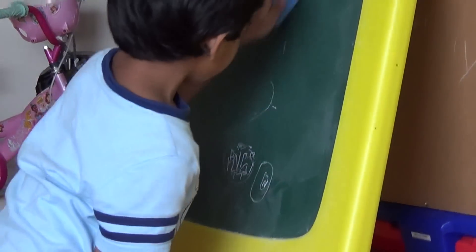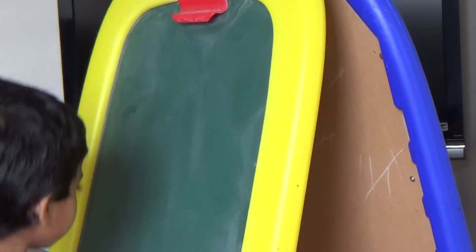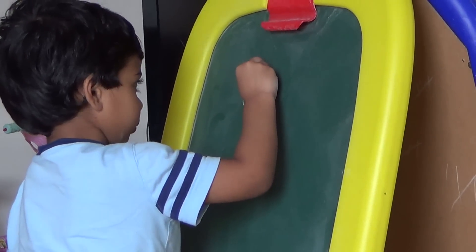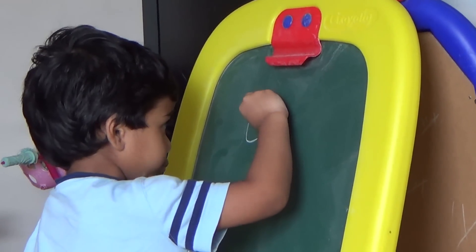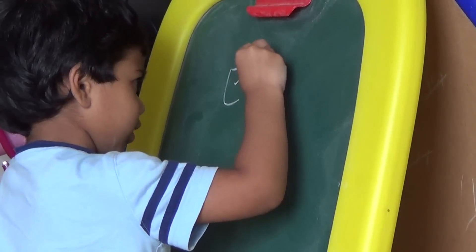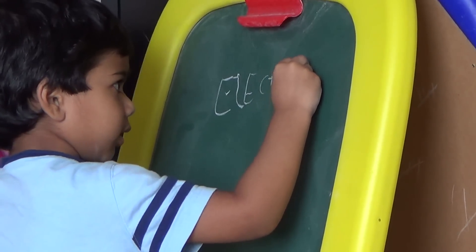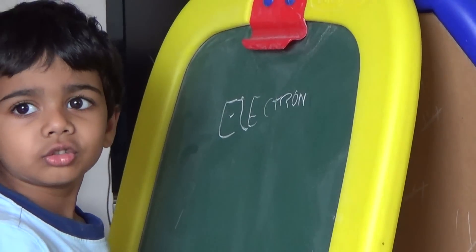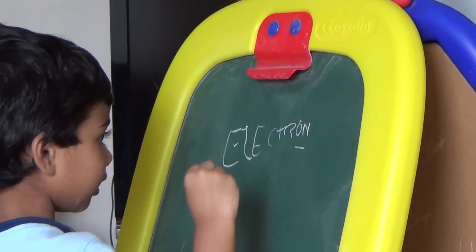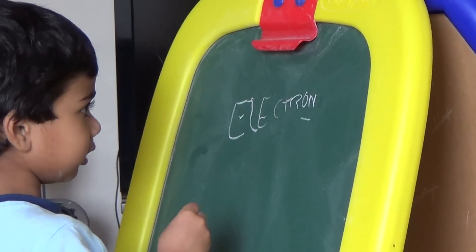The atom has three things. What are the three things? The three things are the electrons. The electron's charge is minus. What's minus, teacher? Minus is a charge of an electron.